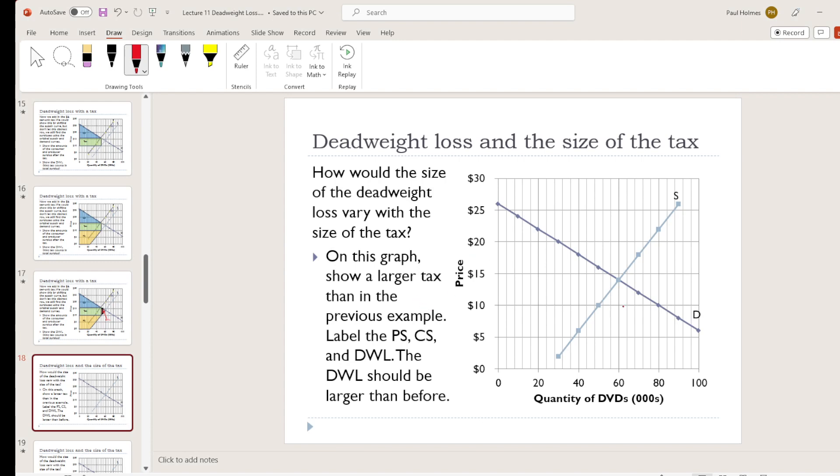Okay, so I'm going to have you guys show a $12 tax on this graph. So not larger, but a $12 tax specifically. Now how can you do that? Well, you could shift the supply curve up $12. That would work just fine.